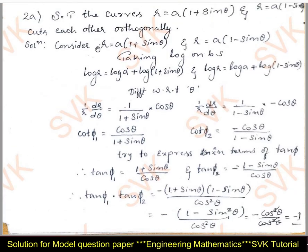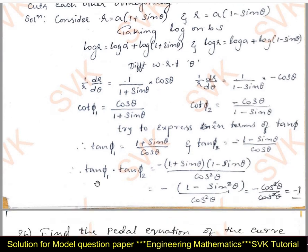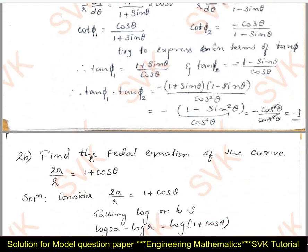This is the required result. Since tan φ₁·tan φ₂ = −1, or equivalently φ₁ − φ₂ = π/2, the given two curves cut each other orthogonally.